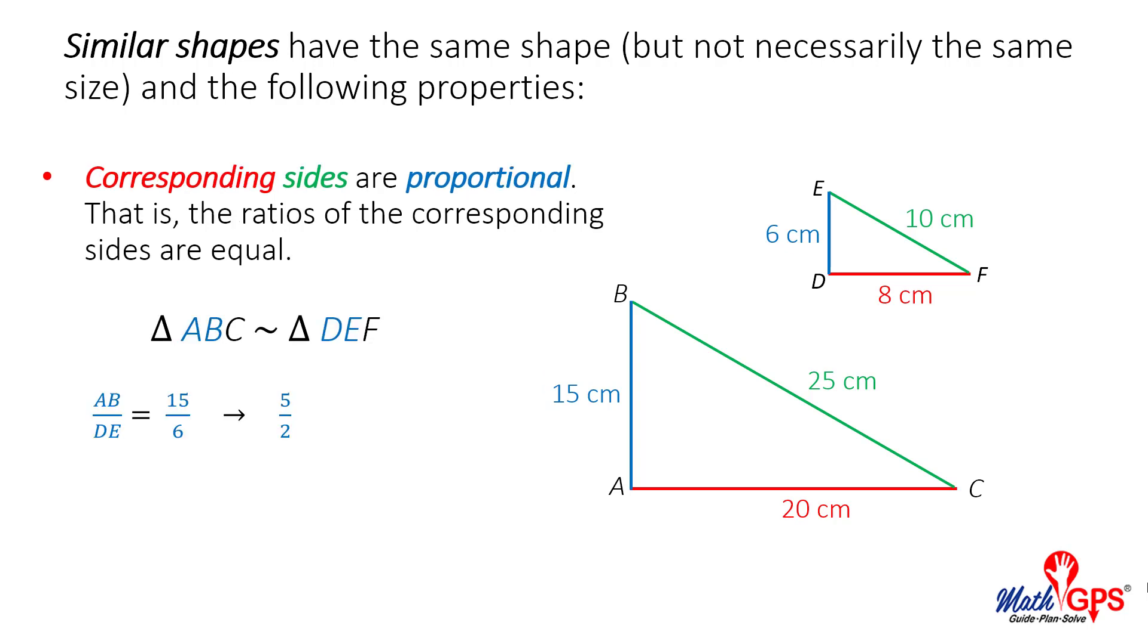Consider side AB of the larger triangle and corresponding side DE of the smaller triangle. The similarity statement shows the line segment endpoints in the same positions as shown in blue. The side lengths can be written as the ratio 15 over 6. If we simplify the ratio, it is renamed 5 over 2.